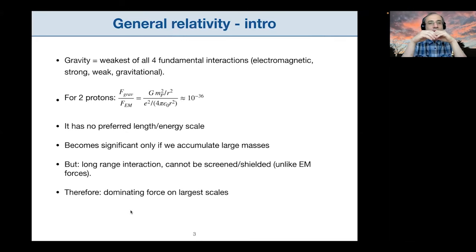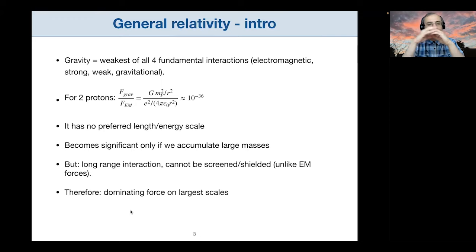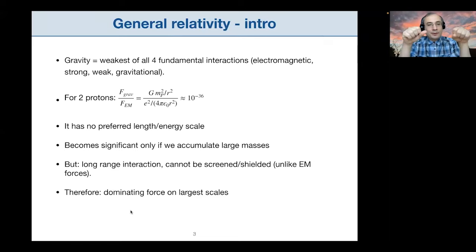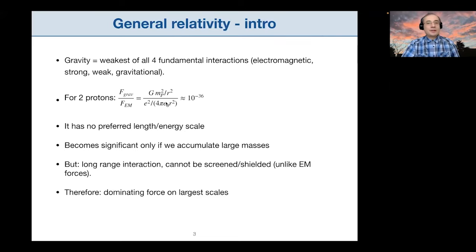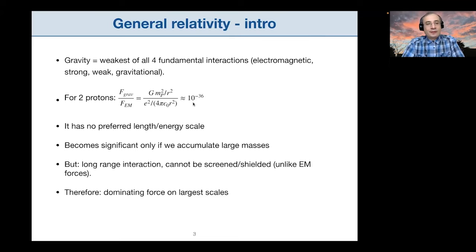Gravity is the weakest of all four fundamental interactions we know — electromagnetic, strong, weak, and gravitational. By weakest, we mean simply that if we take a standard constituent of matter, say two protons, and measure the gravitational force and the electromagnetic force between them, the ratio is on the order of 10 to the minus 30. This means that on the atomic level, gravity plays basically no role whatsoever.